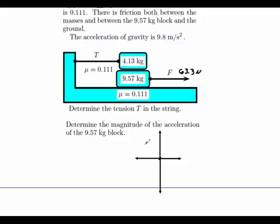Alright, so this would be our tension. There has to be some friction coming this way. And this would be the friction that the 9.57 is causing on the 4.13.